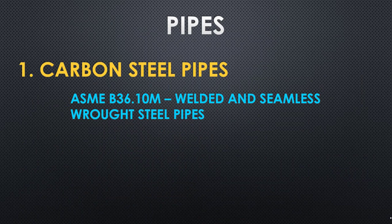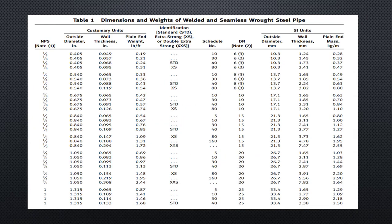In pipes, the first type is the carbon steel pipe. The dimensional details of carbon steel pipes you will get from ASME B36.10M, and the description says 'welded and seamless wrought steel pipe.' This is the cover page of the standard. In the standard, you go to Table 1, where you have two unit systems: one is the imperial unit system based on inches, and the other is the metric unit system based on mm.